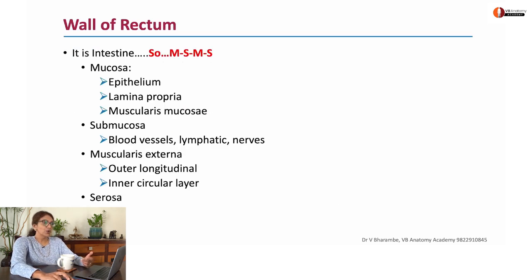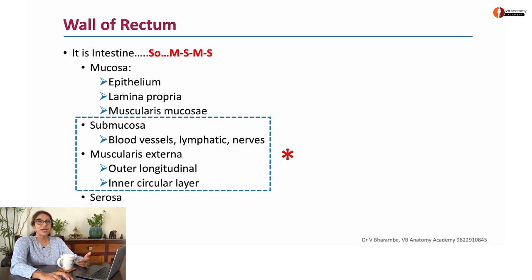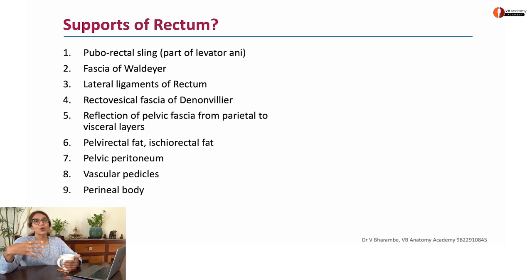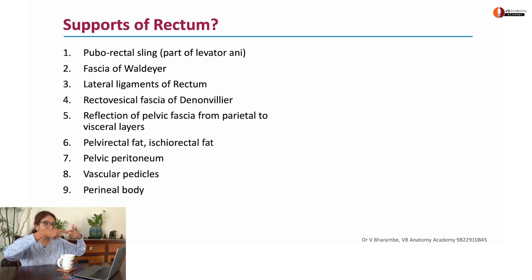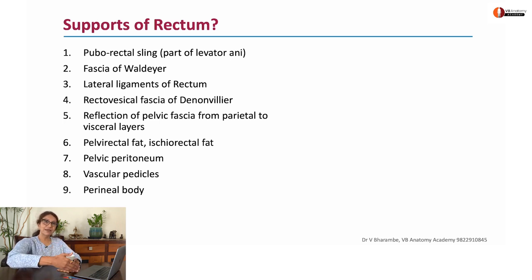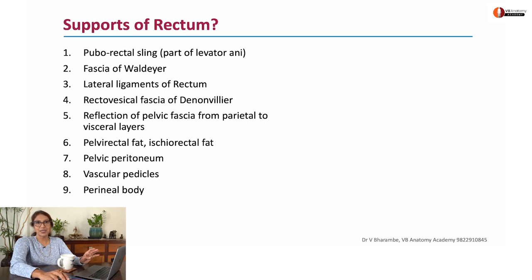Let's continue discussing the wall of rectum — we still have submucosa and muscularis externa to cover. But first, how does a somewhat vertical tube with a few curvatures stay in place? The rectum has many supports: one of the most important is the puborectal ring. From behind there is the fascia of Waldeyer; from the sides there are the lateral ligaments of rectum; in front there is the rectovesical fascia of Denonvilliers; and additionally the peritoneum, the blood vessels, and the perineal body all support the rectum.